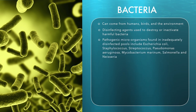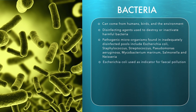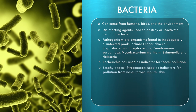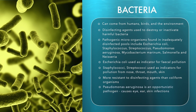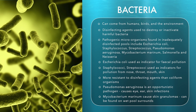Pathogenic microorganisms found in inadequately disinfected pools include Escherichia coli, Staphylococcus, Streptococcus, Pseudomonas aeruginosa, Mycobacterium marinum, Salmonella and Neisseria species. Escherichia coli is used as an indicator for the presence of faecal pollution. Staphylococcus and Streptococcus are used as indicators for pollution originating from the nose, throat, mouth and skin of bathers. They are more resistant to disinfecting agents than the coliform organisms. Pseudomonas aeruginosa is an opportunistic pathogen which can cause eye, ear and skin infections. Mycobacterium marinum causes skin granulomas and can be found on wet pool surrounds.